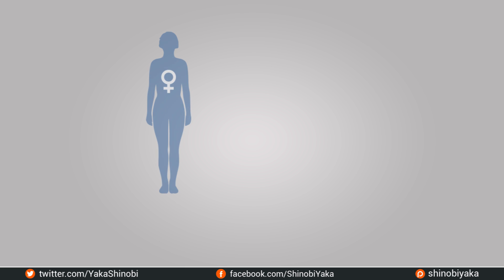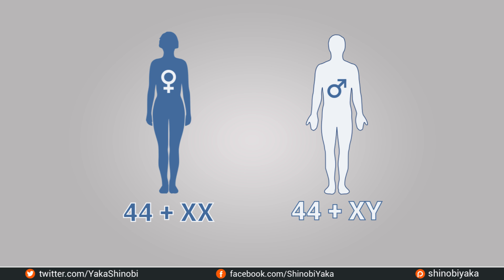Before we can look at what can go wrong with the process of sex determination, we should take a look at several key stages in the process. We should have some understanding of what needs to happen and in what order for normal development, and this will allow us to better understand the exceptions and how they might arise. We already know that primary sex determination is strictly chromosomal, and this chromosomal determination of sex applies to all mammals, not just humans. Females have 44 plus XX chromosomes, and males have 44 XY chromosomes. We also noted that the Y chromosome is a crucial factor for determining sex. I mentioned a particular gene called the SRY gene.